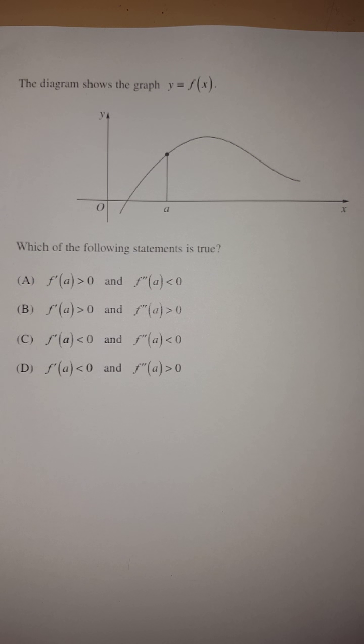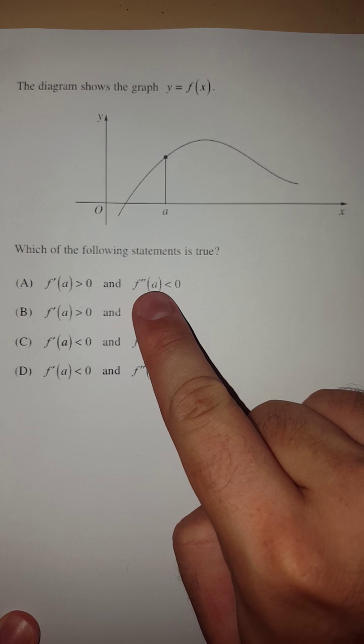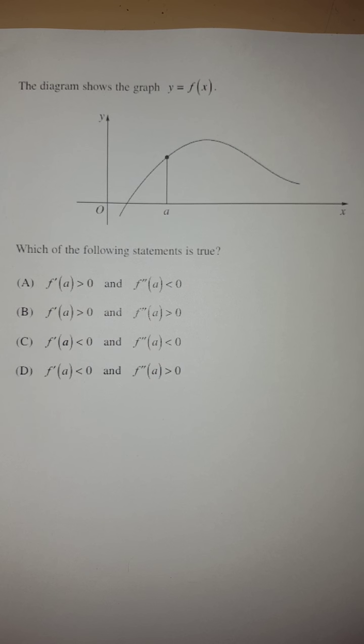So what that's asking, notice that it's talking about a first derivative fact and a second derivative fact, all at the point A. So remember, the first derivative tells us whether or not the function is increasing or decreasing. The second derivative tells us whether or not it's concave up or down.